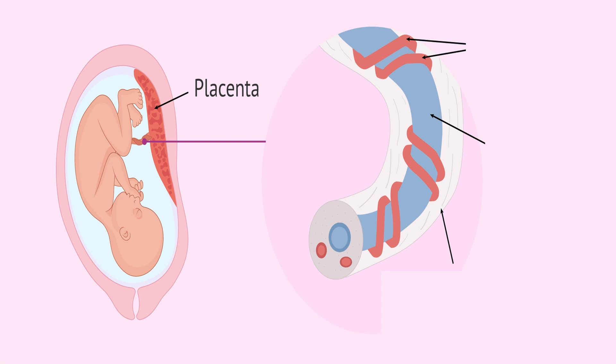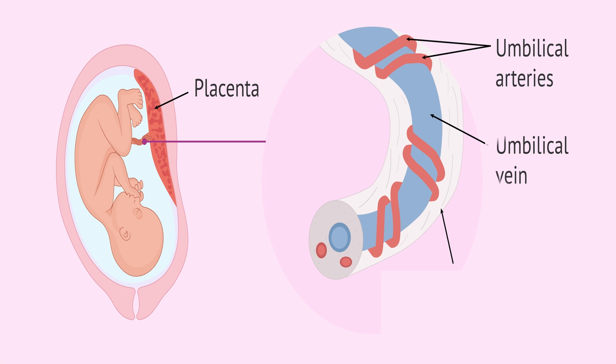Here you can see the placenta. Here we have the two umbilical arteries and one umbilical vein — that is the whole structure of the umbilical cord.